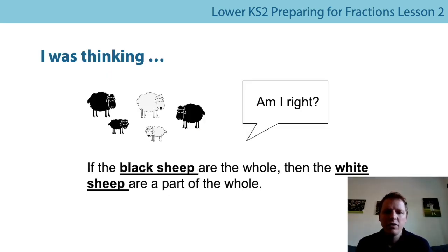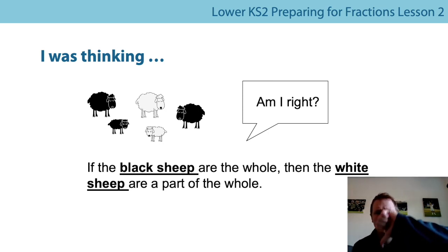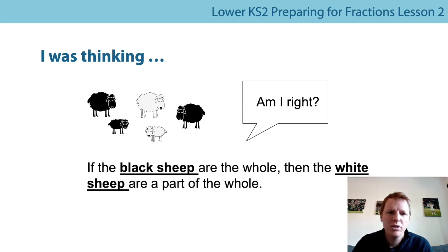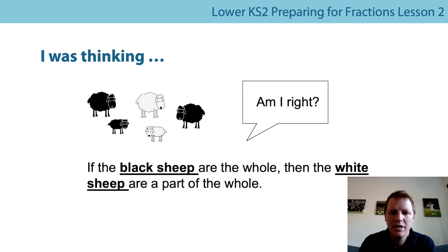Another familiar example — we have our group of sheep. Consider: if the black sheep are the whole, then the white sheep are a part of the whole. I think this sentence is incorrect. If the black sheep are the whole, I'll circle the black sheep — then my part has to be one of those sheep. It cannot be the white sheep. The white sheep would be a different whole. So this sentence is incorrect.